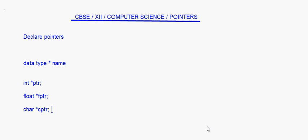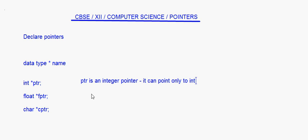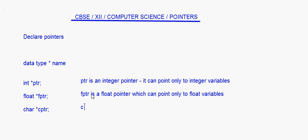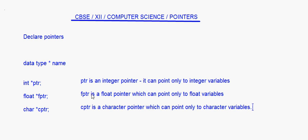Here we have declared three pointers: ptr, fptr, and cptr. Now ptr is an integer pointer, which means it can point only to integer variables. fptr is a float pointer, which can point only to float variables. And cptr is a character pointer, which can point only to character variables. So whatever is the data type of a pointer, it can point only to that type of data.